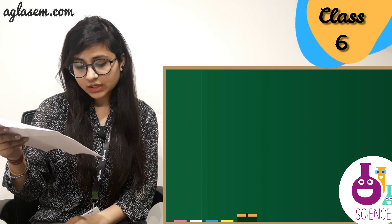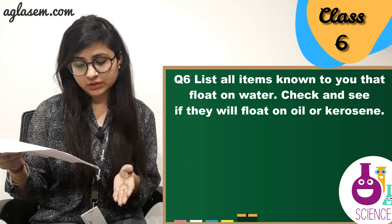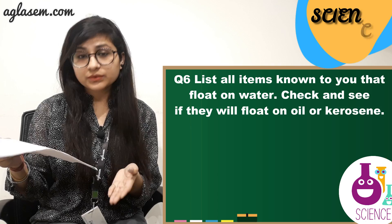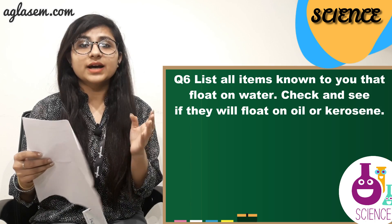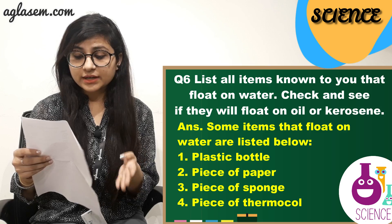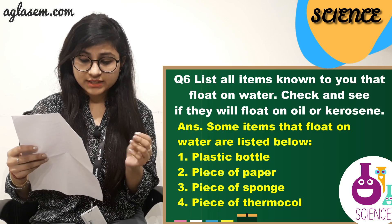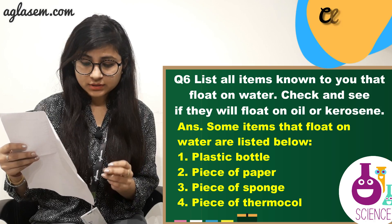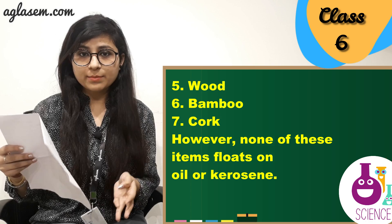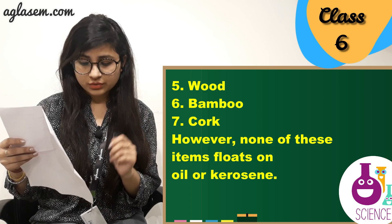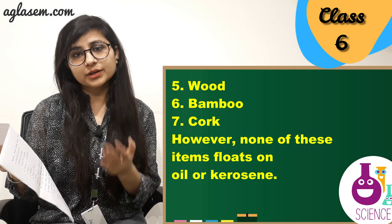Question number 6. List all items known to you that float on water. Check and see if they will float on oil or kerosene. The answer is: some items that float on water are plastic bottle, piece of paper, piece of wood, piece of thermacol, wood, bamboo, and cork. However, none of these items float on oil or kerosene.